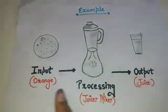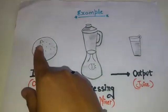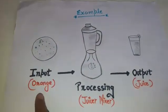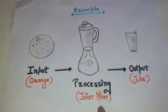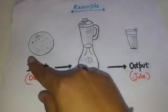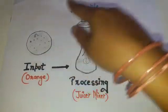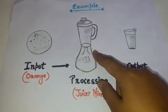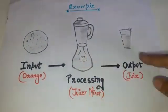Just see, I've taken orange as an input and for processing I have taken juicer mixer, and if I put this orange in the juicer mixer, what will I get as result? The juice. Yes, I get the result, juice.